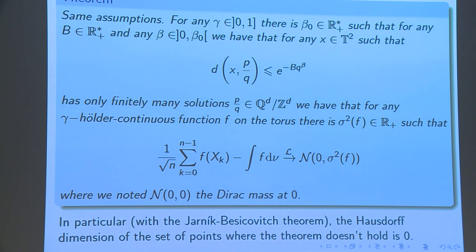And this is my assumption. I ask the distance between x and p over q to be bigger than the exponential. And this is exactly saying that I don't want to be too close to rationals. Yes, I ask that this inequality has only finitely many solutions.